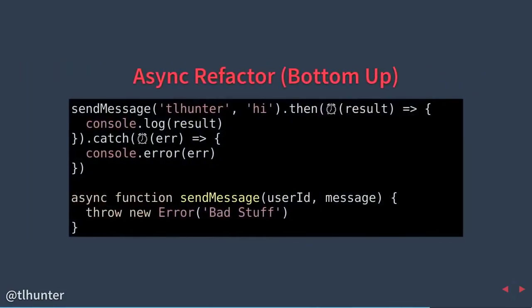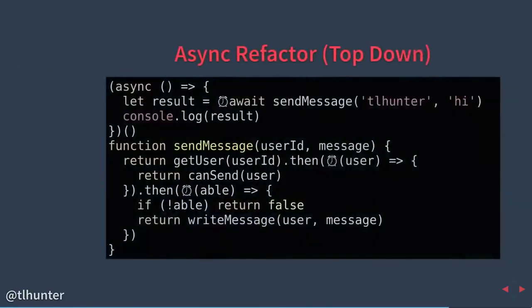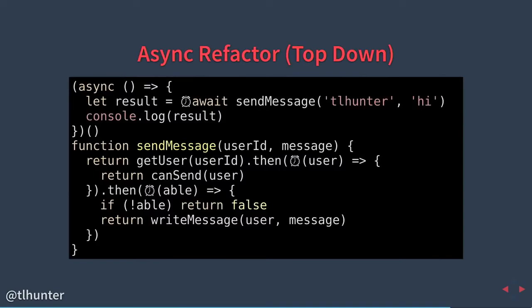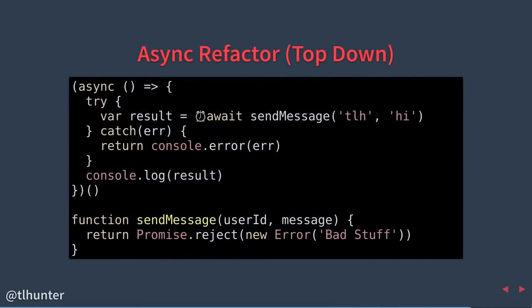Errors are also completely interoperable. Throwing an error from an async function will trigger the catch with our promise code. You can also refactor from the top down — perhaps change your Express code first to async, then change your database code later. In that case, awaiting a sendMessage call that is just a plain old promise works perfectly. This is sweet for libraries too: you can build a library using async functions, and calling environments can use it as a normal promise. If a rejected promise is returned from your model code, you can wrap it in a try/catch and it will execute the way you'd expect.